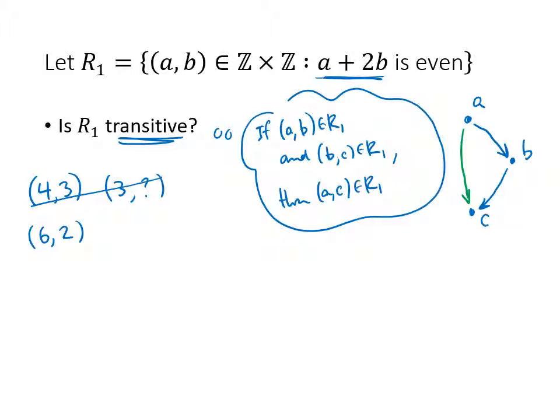How about (6, 2)? 6 + 2(2) is 10, that's even. And (2, 5), 2 + 2(5) is 12, that's also even. So 6 would be my a, 2 would be my b, and c would be 5. So (a, b) is in my relation, (b, c) is in my relation.